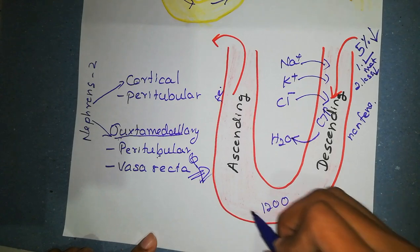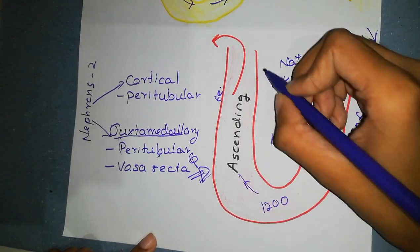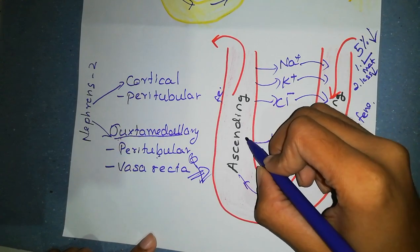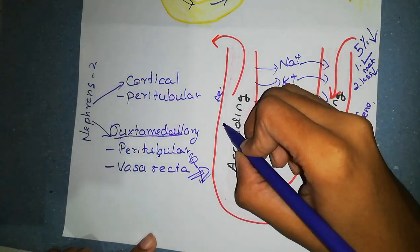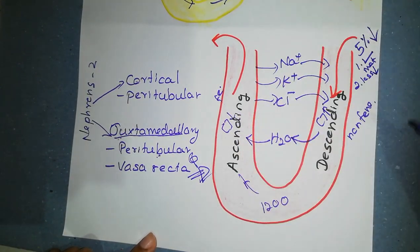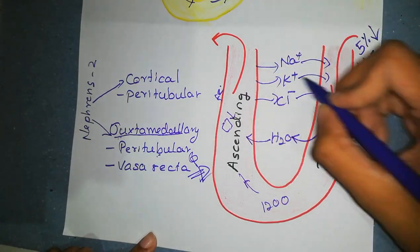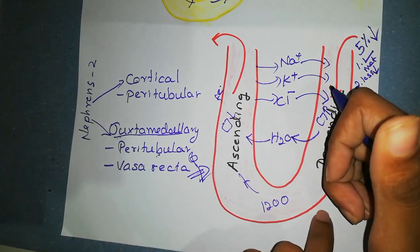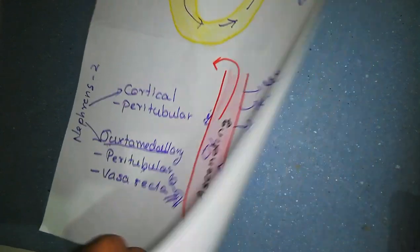But when blood ascends back, solutes diffuse back out to the medullary interstitium, water moves into vasa recta and blood becomes less concentrated. Therefore solutes recirculate in the medullary. So the osmotic gradient created by counter-current multipliers will not wash out. Medullary osmolarity is maintained.